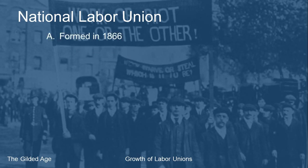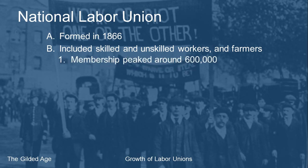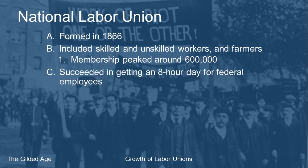Now we'll go through some of the big unions from the Gilded Age. The first is the National Labor Union, formed in 1866. It was an all-inclusive union — it included both skilled and unskilled workers, and also farmers. Membership peaked at around 600,000 nationwide. They were at least successful in getting Congress to pass an eight-hour workday for federal employees.